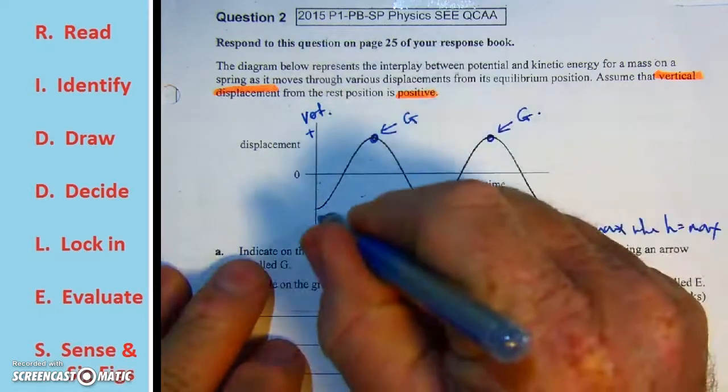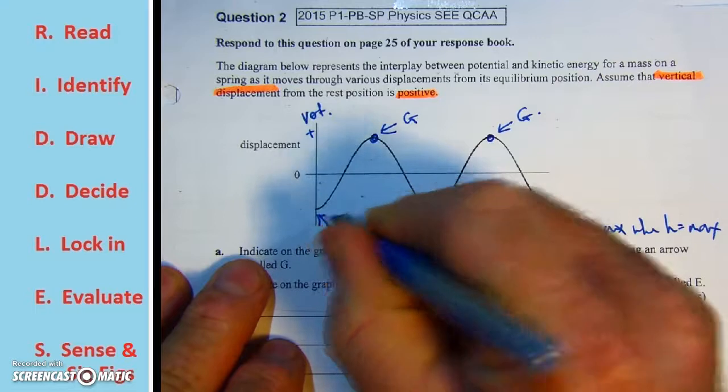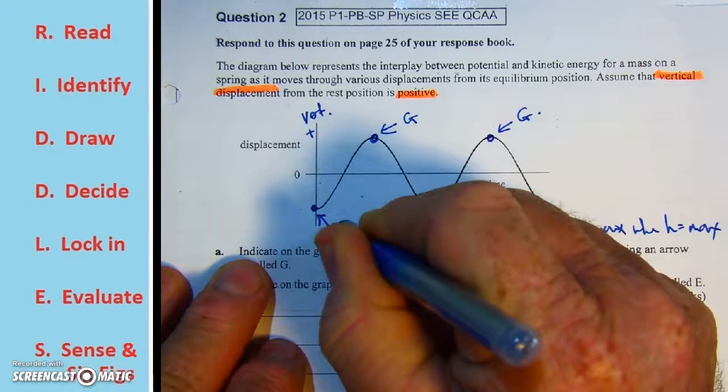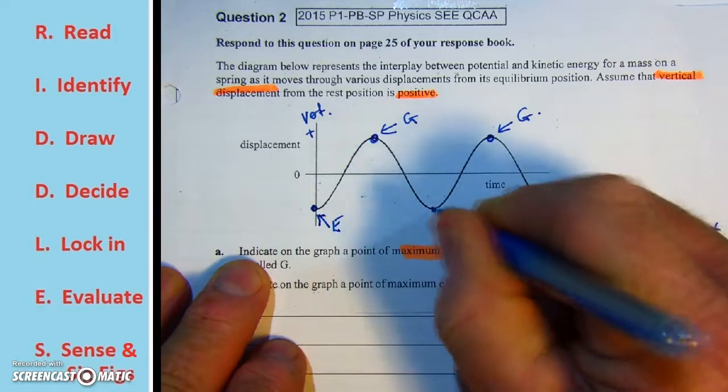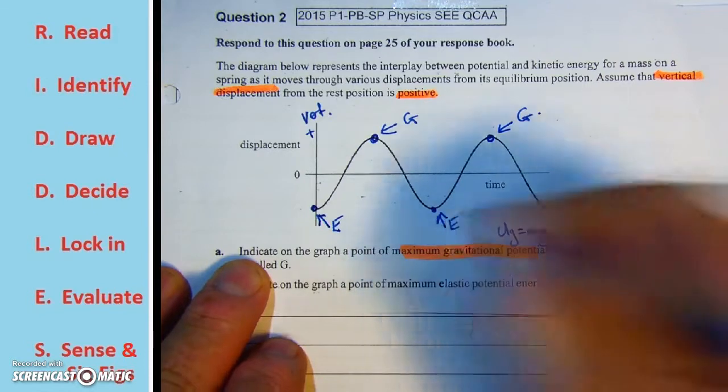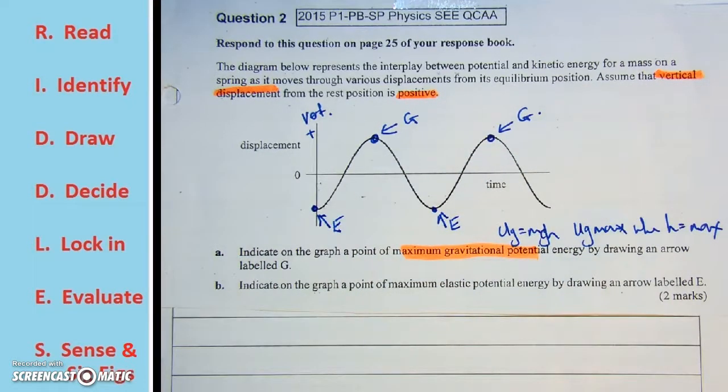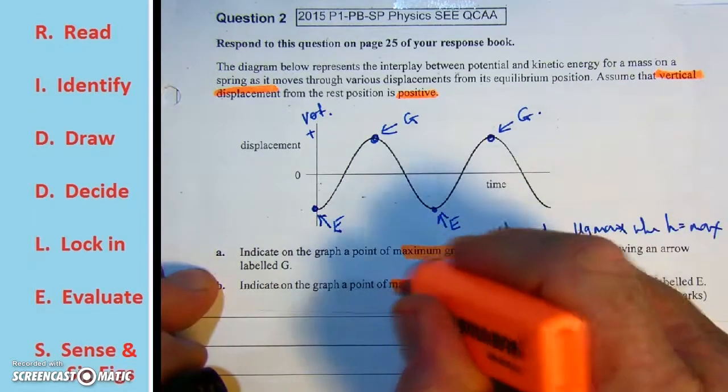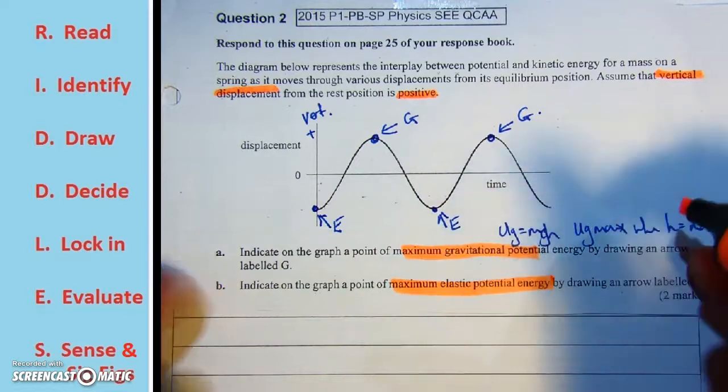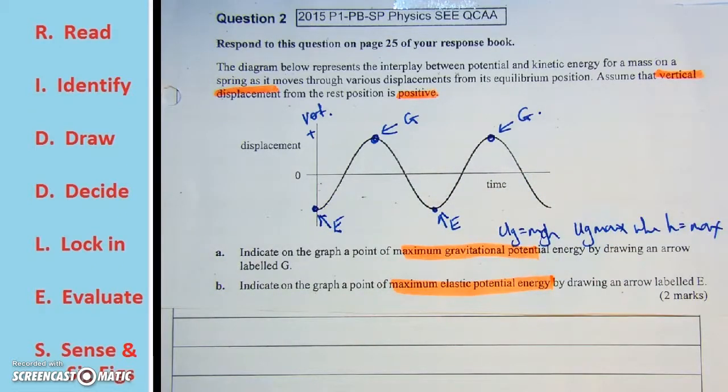Therefore, we're looking here for when the kinetic energy and the gravitational potential energy are going to be at a zero, because that will be when the spring is at its maximum potential energy. So maximum potential energy we're looking at points labeled on the graph thus.